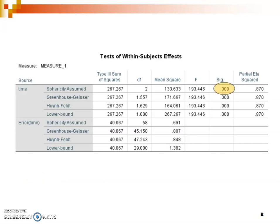After the F value, report the p-value. Remember, SIG equals p. However, since SPSS shows 0.000, we never report p as exactly zero — it's extremely unlikely but not impossible. Instead, report it as p < 0.001. Ideally, APA style requires the actual p-value, but when it's this small and unspecified, report p < 0.001.